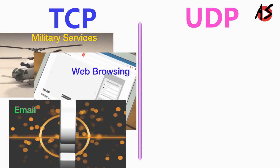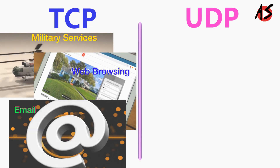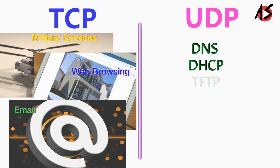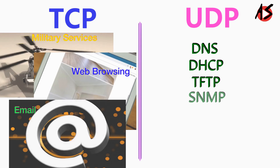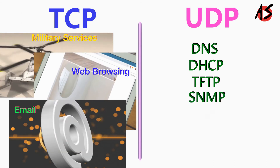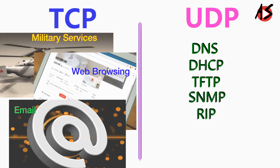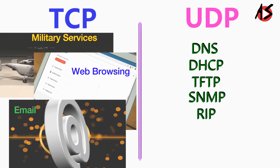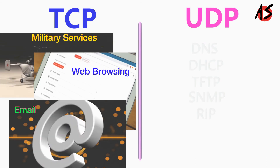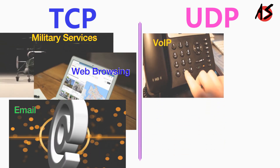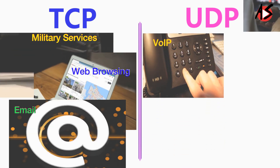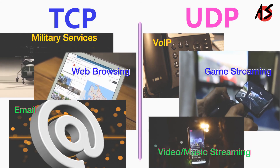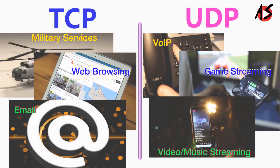UDP is used by DNS, DHCP, TFTP, SNMP, and RIP, and is used where fast communication is required, like VoIP, game streaming, and video and music streaming, etc.